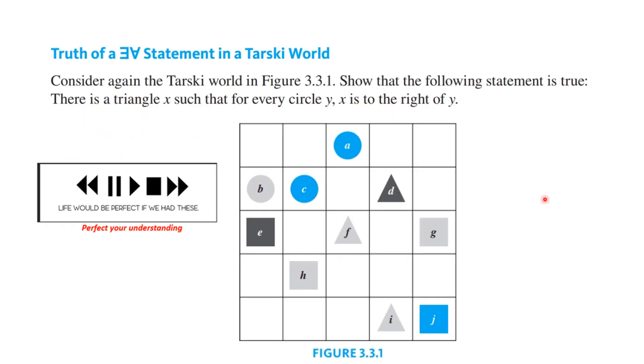So here is a problem for you to do. We have the finite world again, and you're supposed to show the following statement is true. There is a triangle x such that for every circle y, x is to the right of y. You know what to do.